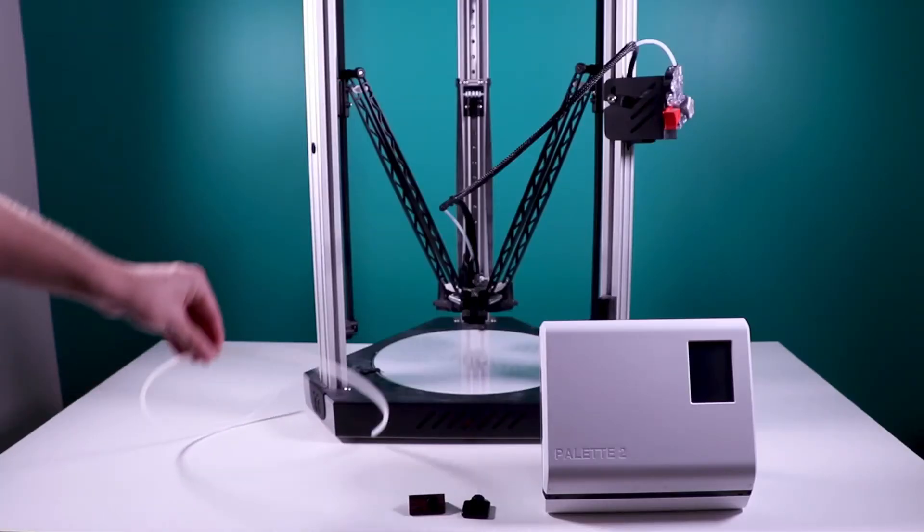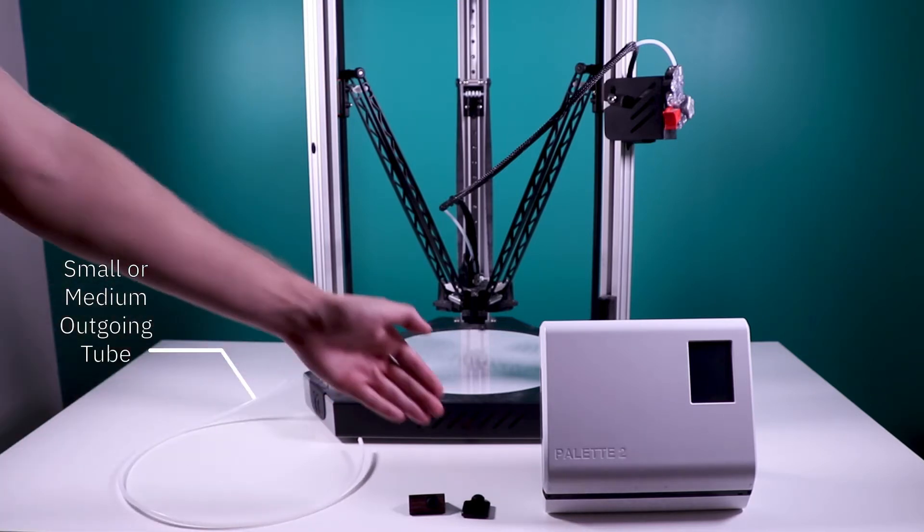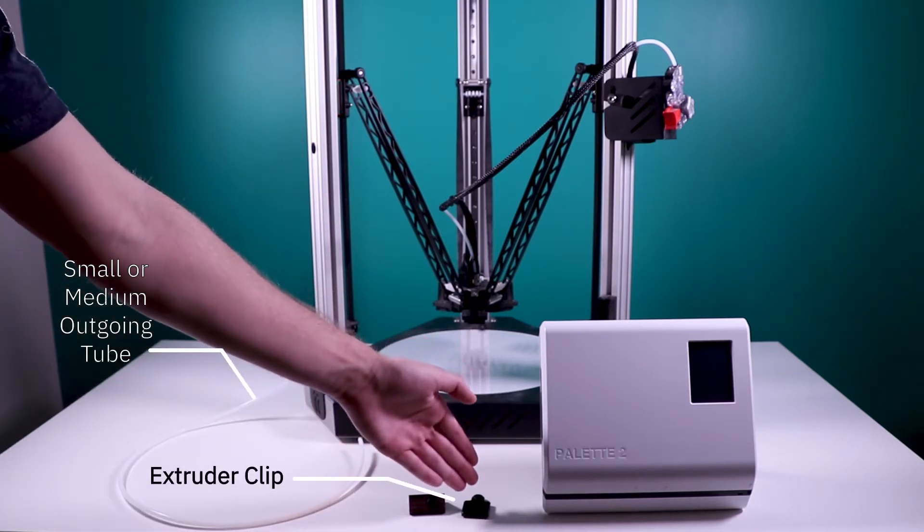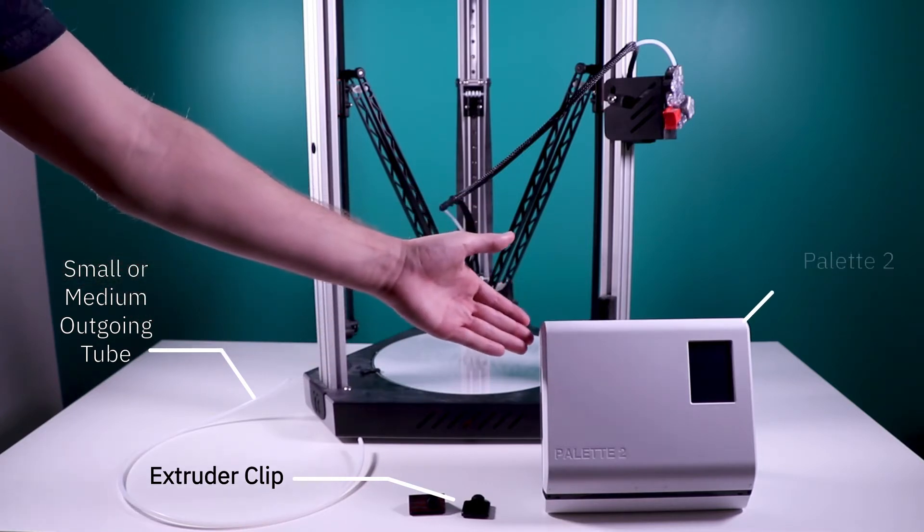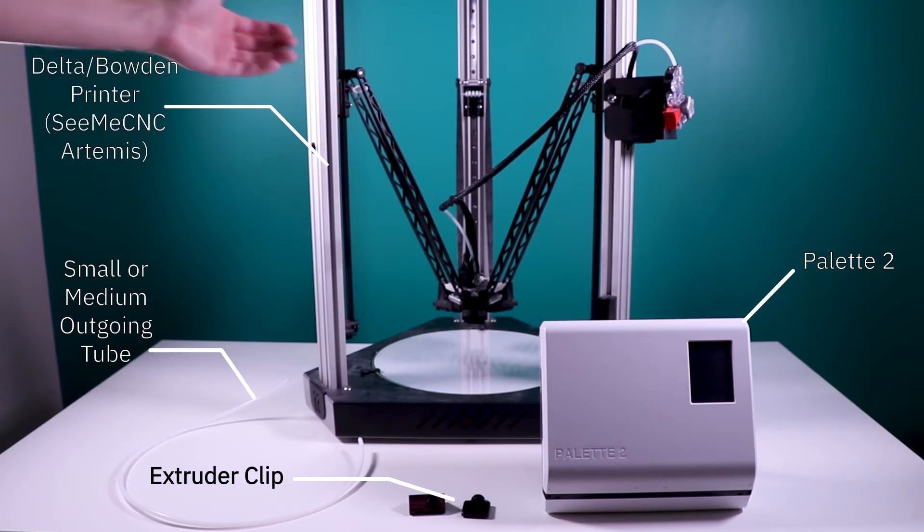Some things you're going to need first are the small or medium outgoing tube, the extruder clip, the Palette 2, and a delta or Bowden style 3D printer. In this case, we are using a SeeMeCNC Artemis.